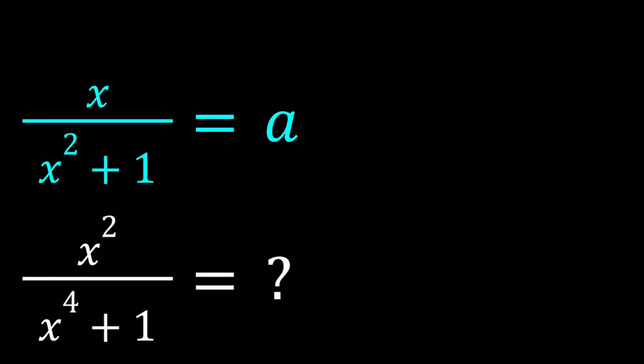Hello everyone. In this video we're going to be evaluating an algebraic expression. We're given that x over x squared plus 1 is equal to a and we're supposed to evaluate or find the value of x squared over x to the 4th plus 1 in terms of a. I'll be presenting at least two methods and one of the methods will be a little longer than others. Let's start with the first one.